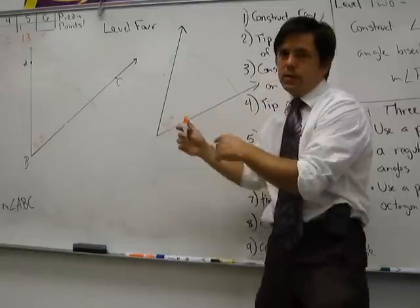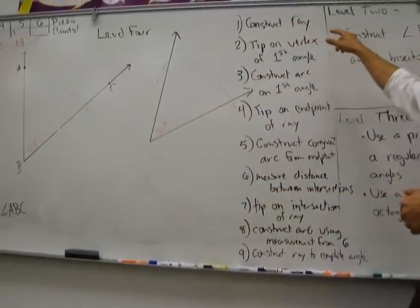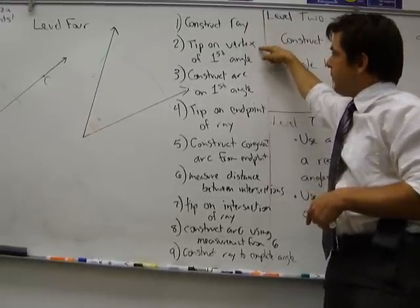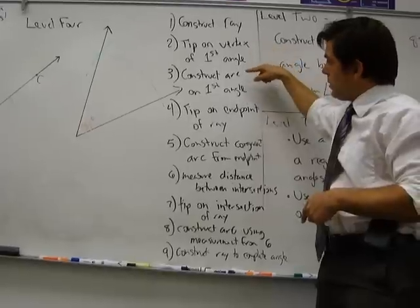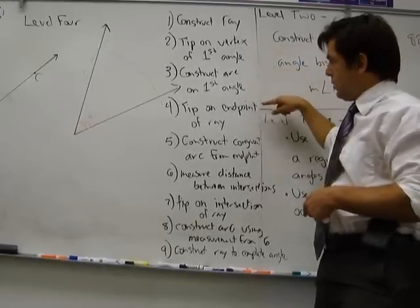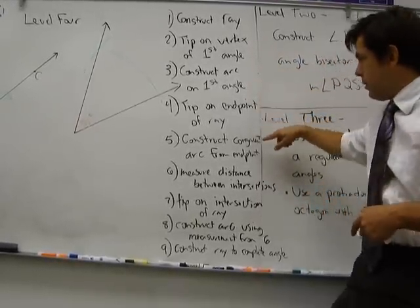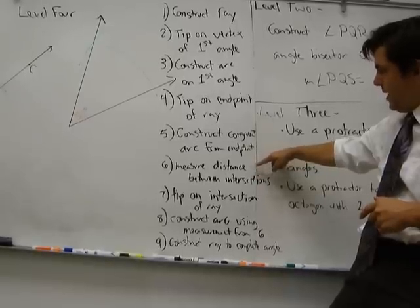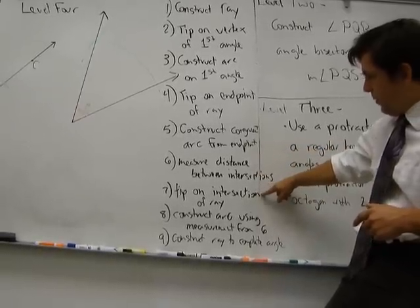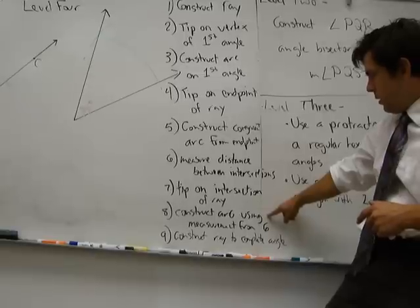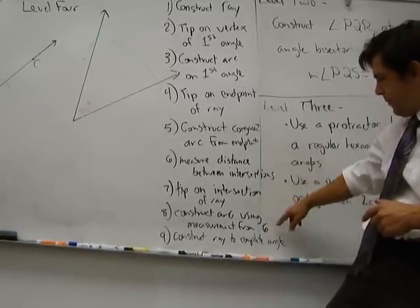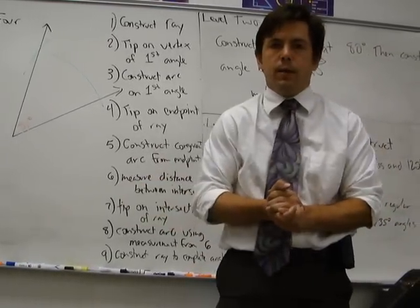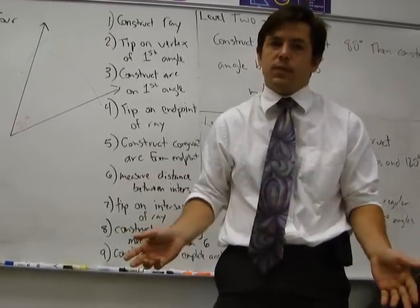Okay. So follow these directions. Let me read this for you one more time because I know the handwriting is D plus at best. First, construct ray. Step two, tip on vertex of first angle. Step three, construct arc on first angle. Step four, tip on endpoint of ray. Step five, construct congruent arc from that endpoint. Step six, measure the distance between the intersections. Step seven, put the tip on the intersection of the ray. Step eight, construct an arc using the measurement from step six. Step nine, construct a ray to complete the angle. So that's how you construct a congruent angle. That's level four for this week. Thank you very much.